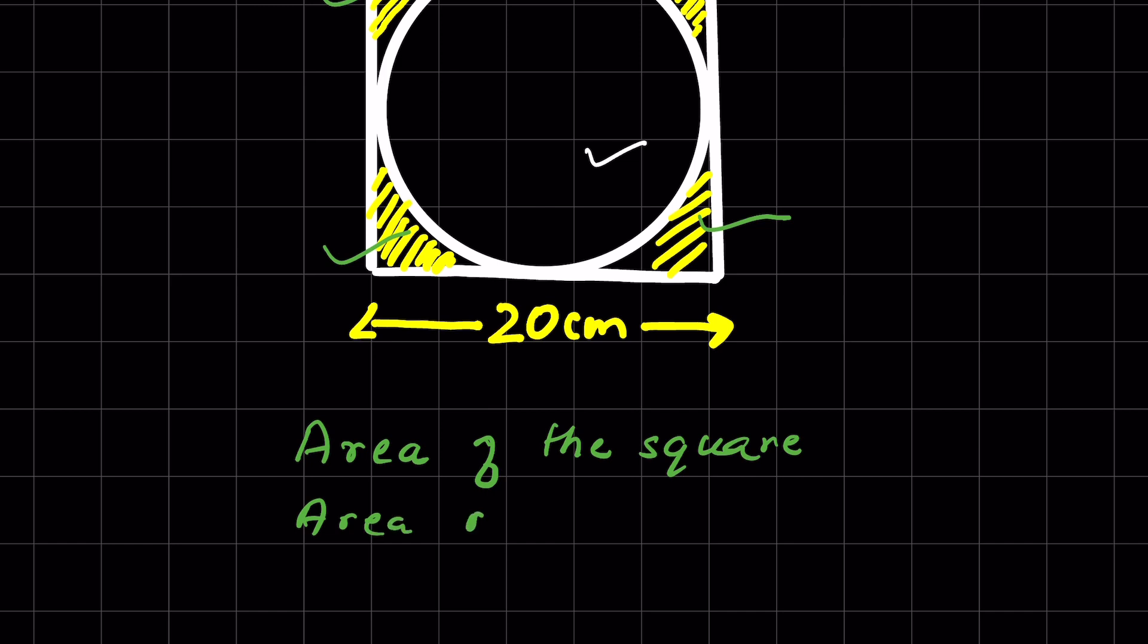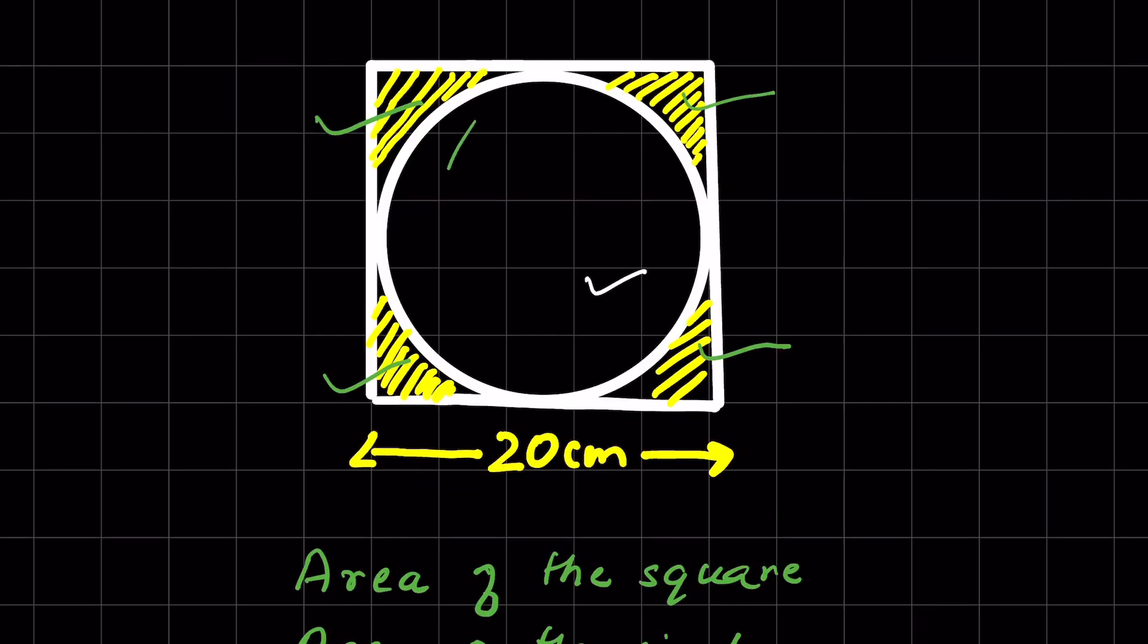Second, we need to find the area of the circle. And if we subtract this area from the area of the square, then we can get the shaded region.